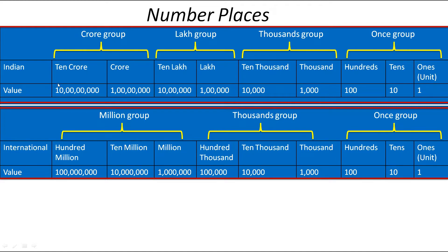Same way, in the International Number System, there are 3 groups. 1s, 10s and 100s are included in the 1s group. Then 1,000, 10,000 and 1,00,000 are included in the thousands group. And million, 10 million and 100 million are included in the millions group.